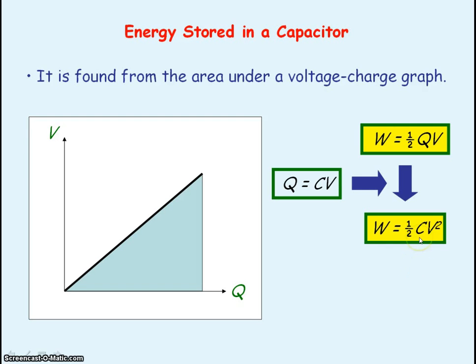As the capacitance C is a constant for a capacitor, we can then see that the energy stored in a capacitor is directly proportional to the voltage squared. So that means if we double the voltage across the capacitor, then the energy stored will be two squared, that is four times greater.